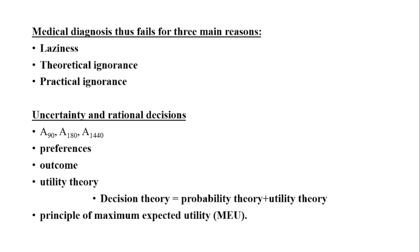Next is uncertainty and rational decisions. There are three plans: A90, A19, and A1440, which means leaving home 24 hours in advance. To make such choices, an agent first must have preferences among the different possible outcomes of the various plans. An outcome is a completely specified state, including such factors as whether the agent arrives on time and the length of the wait at the airport. To describe preferences and make quantitative arguments based on them, we employ utility theory. The general theory of rational decision making known as decision theory combines probability and preferences expressed by utilities. Thus, decision theory equals probability theory plus utility theory. An agent is rational if and only if it chooses the action that yields the highest expected utility averaged over all the possible outcomes of the action.